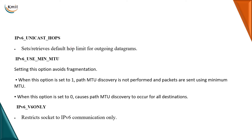IPv6 unicast hops: this will set or retrieve the default hop limit for outgoing datagrams — for example, setting that every datagram should not do more than nine hops. So it is used to either set or retrieve this value.